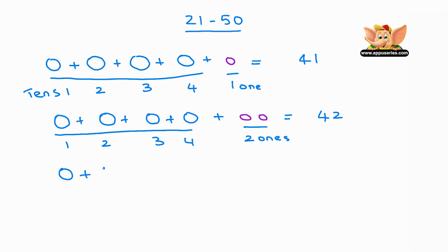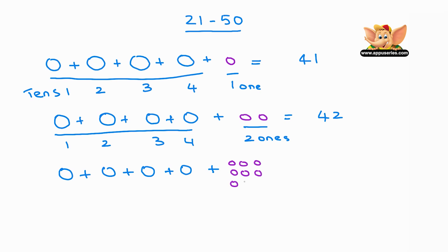Let's skip ahead and draw four circles plus one, two, three, four, five, six, seven, eight, nine — nine grapes. That's four 10s plus nine 1s equals 49.